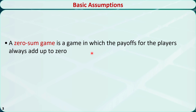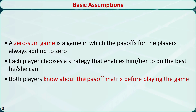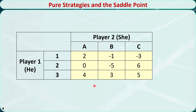Some basic assumptions. In a two-person zero-sum game, every dollar that one player wins comes out of the other player's pocket. So the two players have totally conflicting interests, and the payoffs always add up to zero. Both players are rational, and each chooses a strategy that enables him or her to do the best he or she can. Both players have knowledge about the payoff matrix.